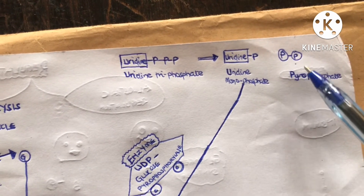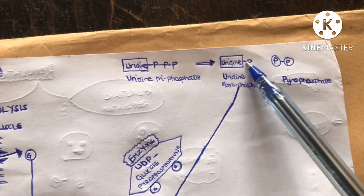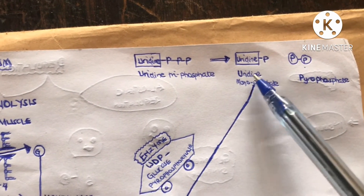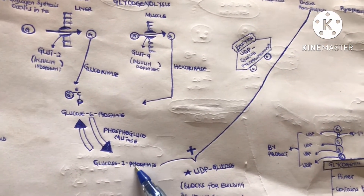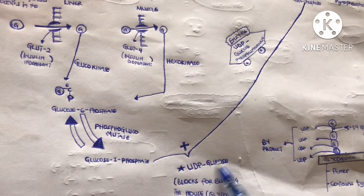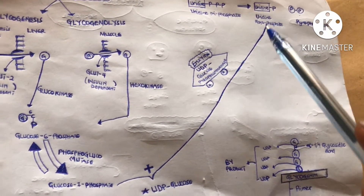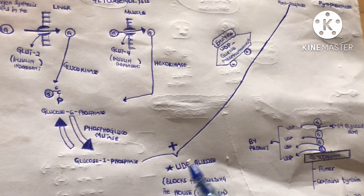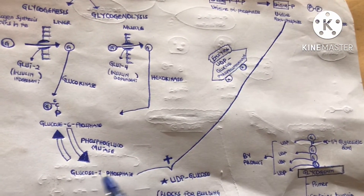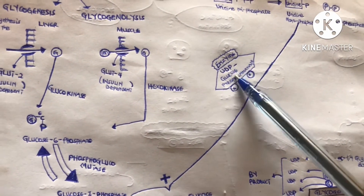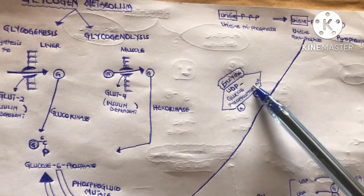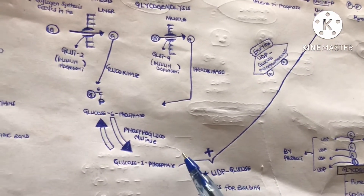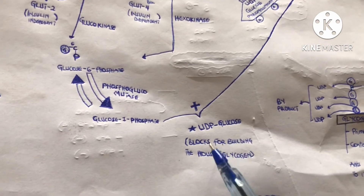The uridine monophosphate is added to glucose-1-phosphate to form UDP-glucose. This whole process is catalyzed by the enzyme UDP-glucose pyrophosphorylase. UDP-glucose serves as the building blocks for building the glycogen. Think of glycogen as a house, and the UDP-glucose units are the blocks used to build it.